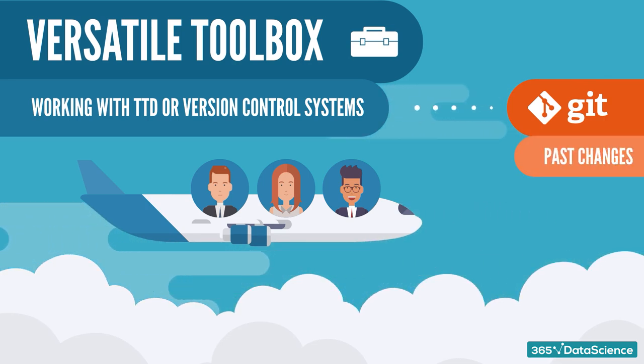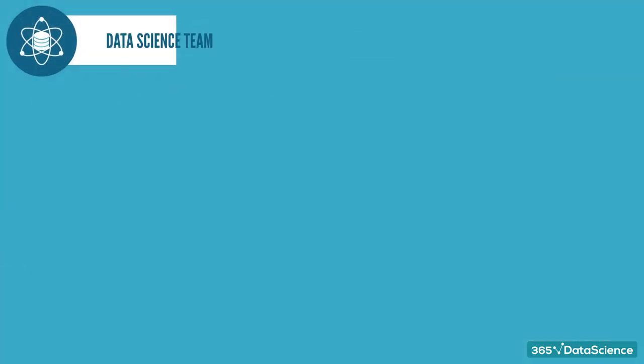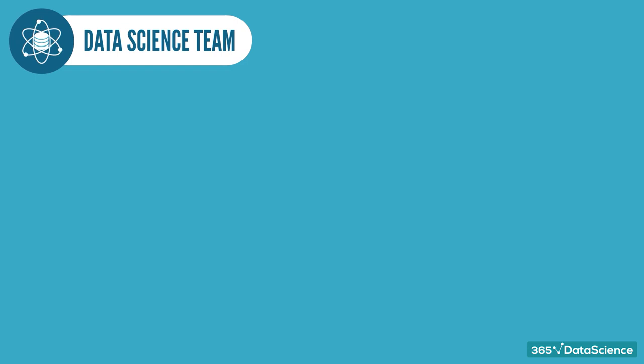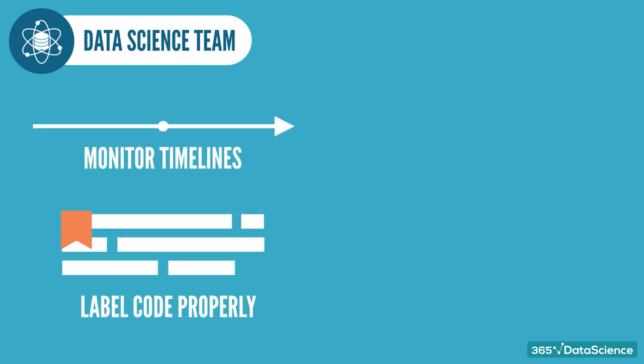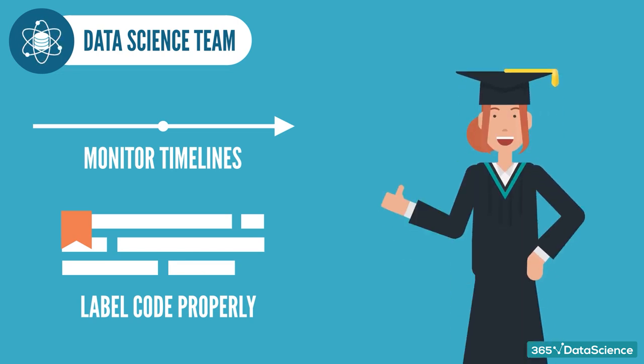including past changes, speed of execution, and development of the project. A data science team needs someone who knows how to monitor timelines or check if the code is labeled properly. Not many people are highly skilled at that, but a CS graduate has the know-how that certainly gives them an edge.